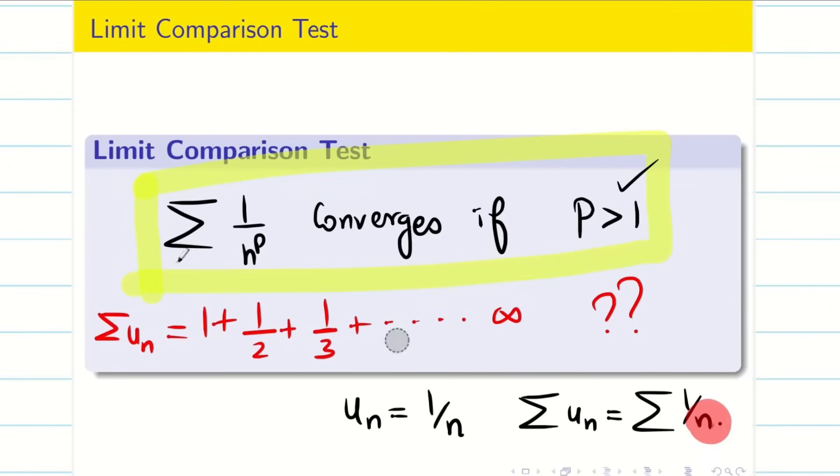See here, it is 1 by n. My p value is going to be 1. So, it is not greater than 1. So, immediately I will say this series is a diverging series.